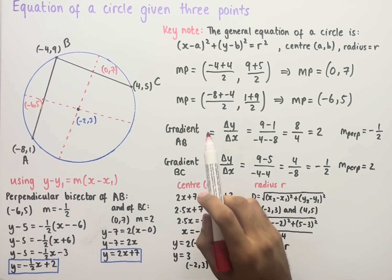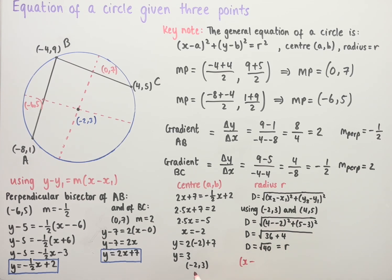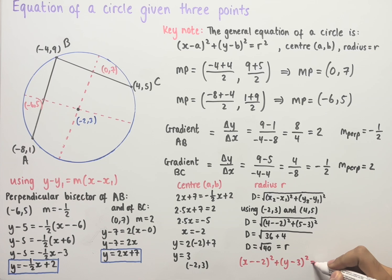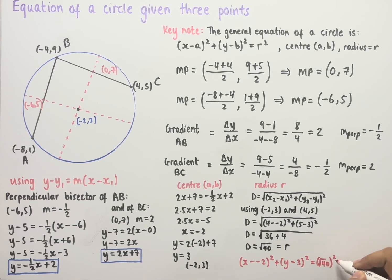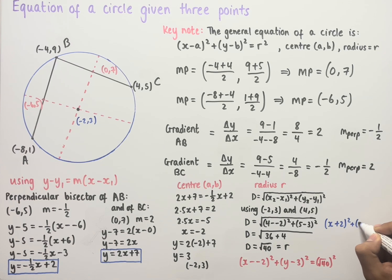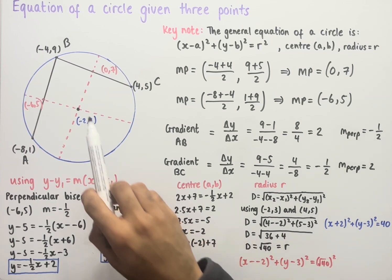Working out the equation of the circle using (x - a)² + (y - b)² = r², where a = -2 and b = 3, we get (x - (-2))² + (y - 3)² = (√40)². Simplifying, that's (x + 2)² + (y - 3)² = 40. This is the equation of the circle.